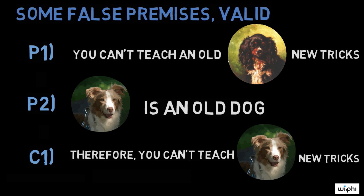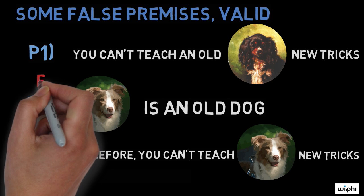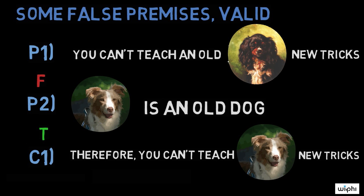Here, the first premise is false, but the reasoning is valid because the conclusion follows logically from the premises.